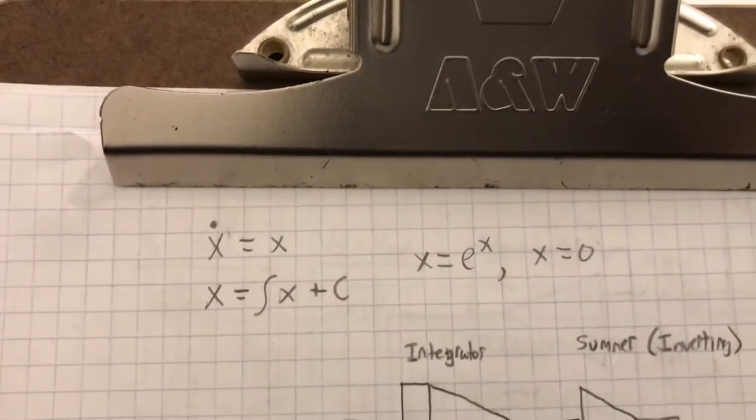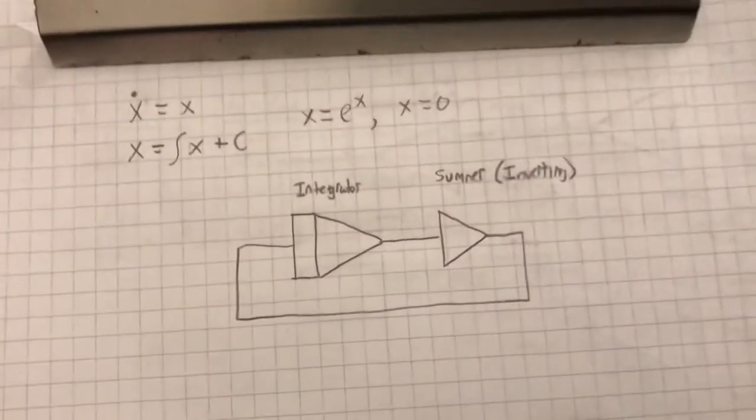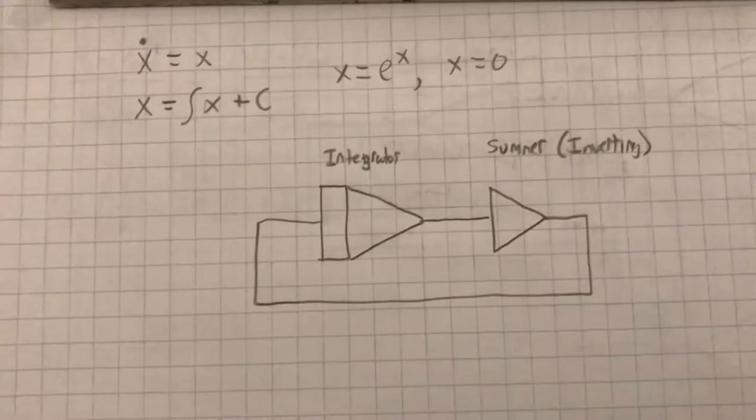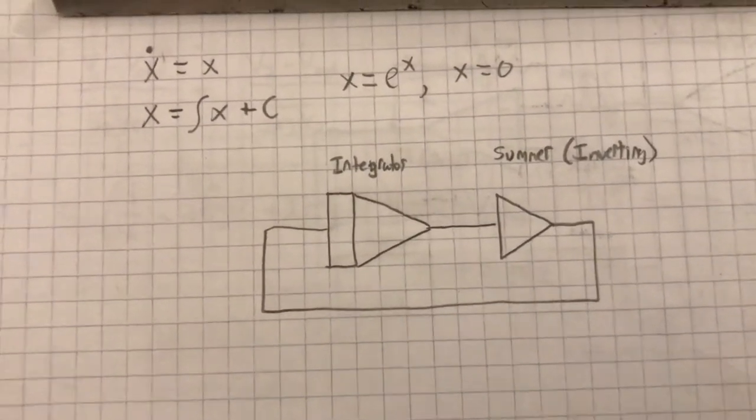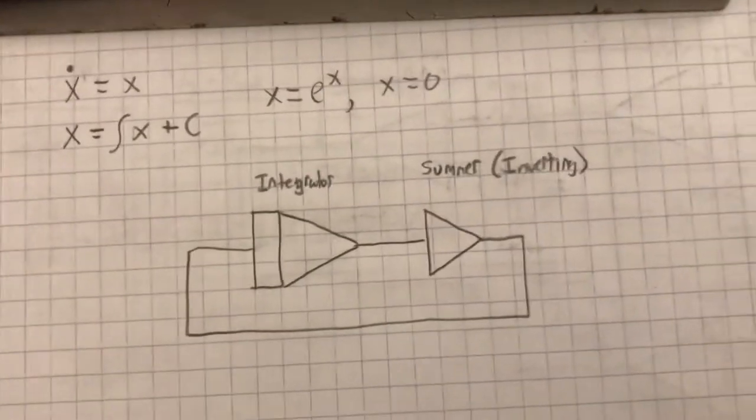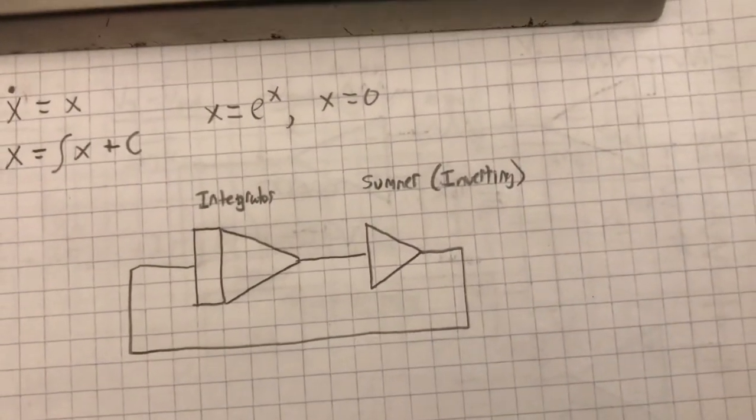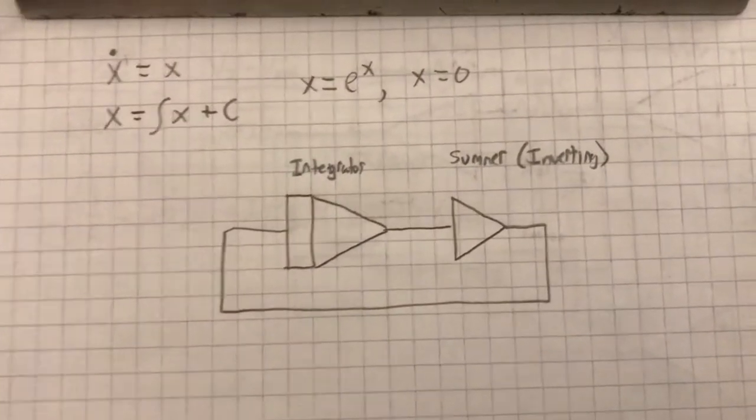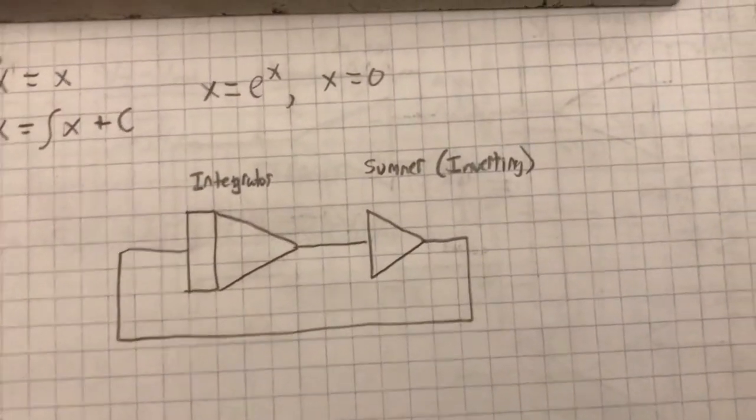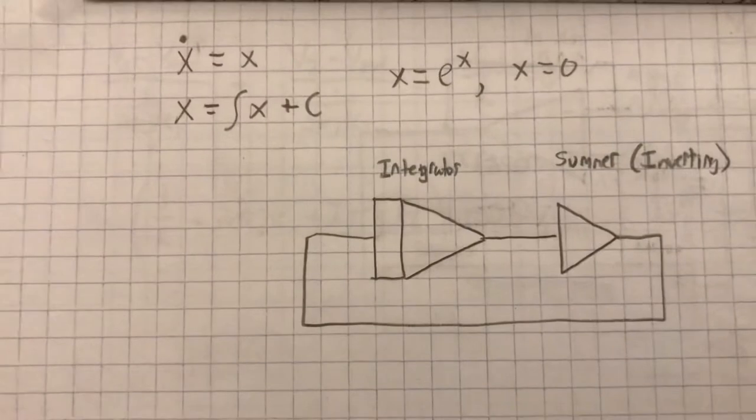So the way you solve this in the analog domain is you set up the computer as shown in this little diagram here. So you have an integrator and a summer, which is an inverting summer. In analog computers the summing components are typically inverting as well as the integrators.